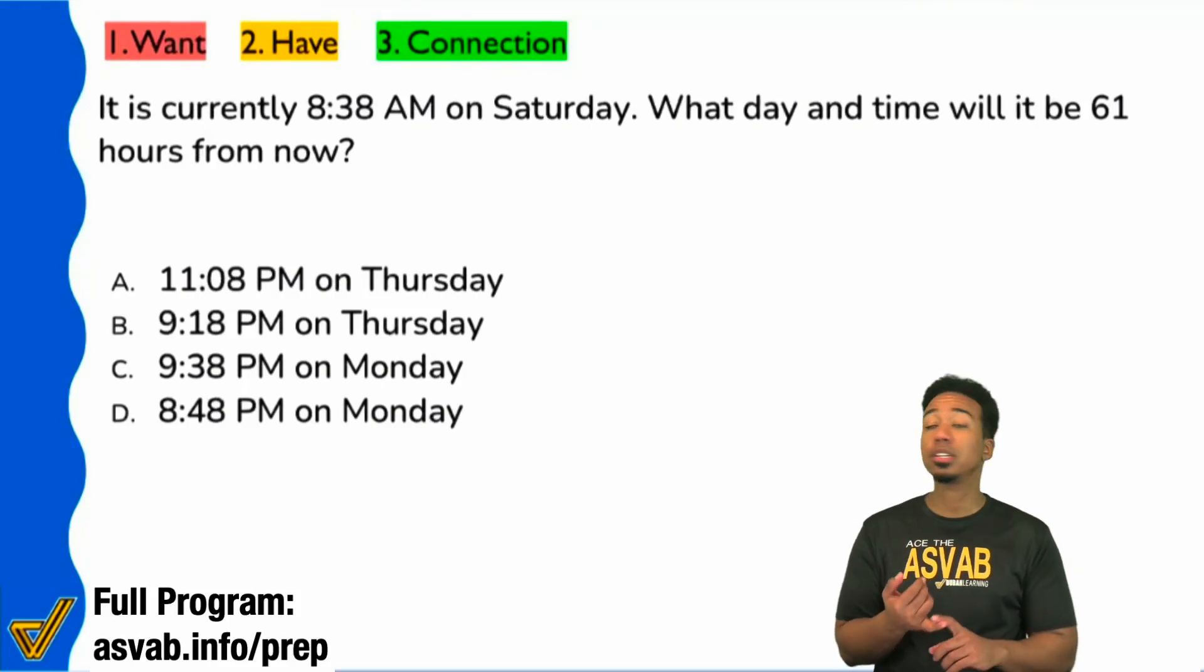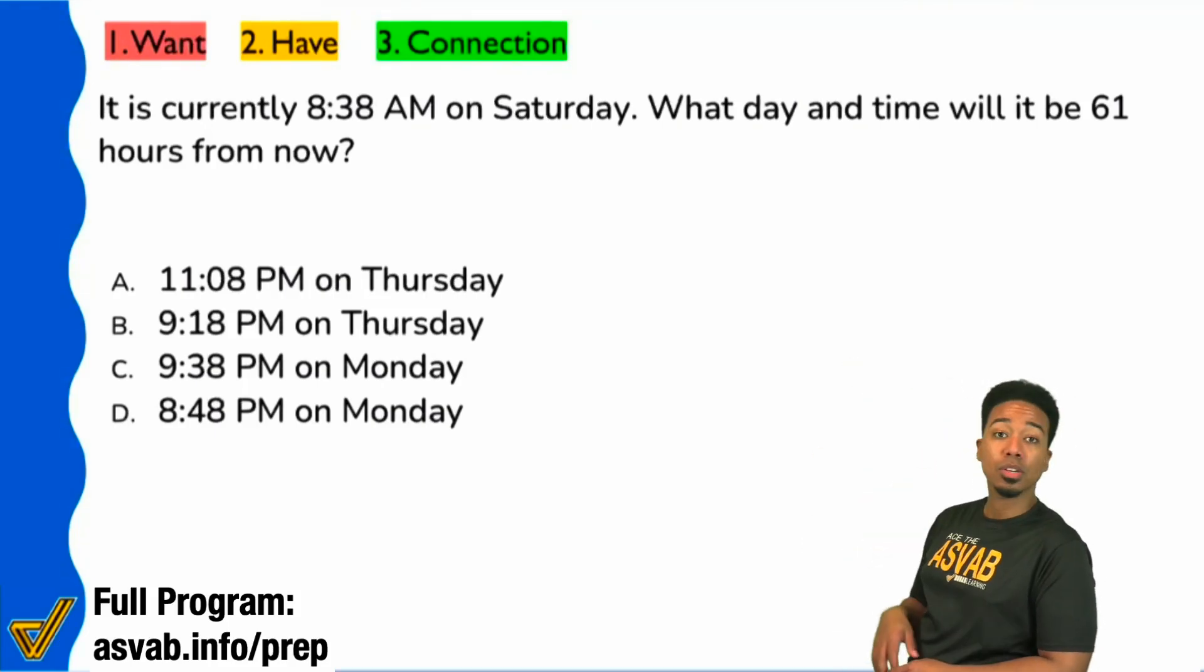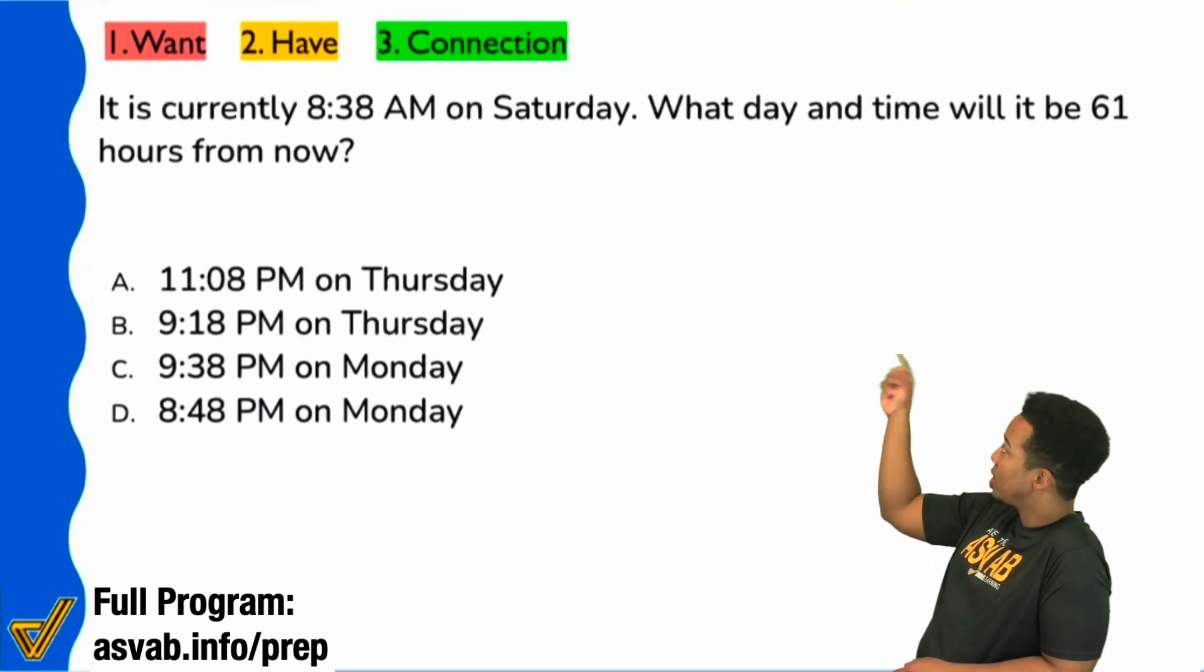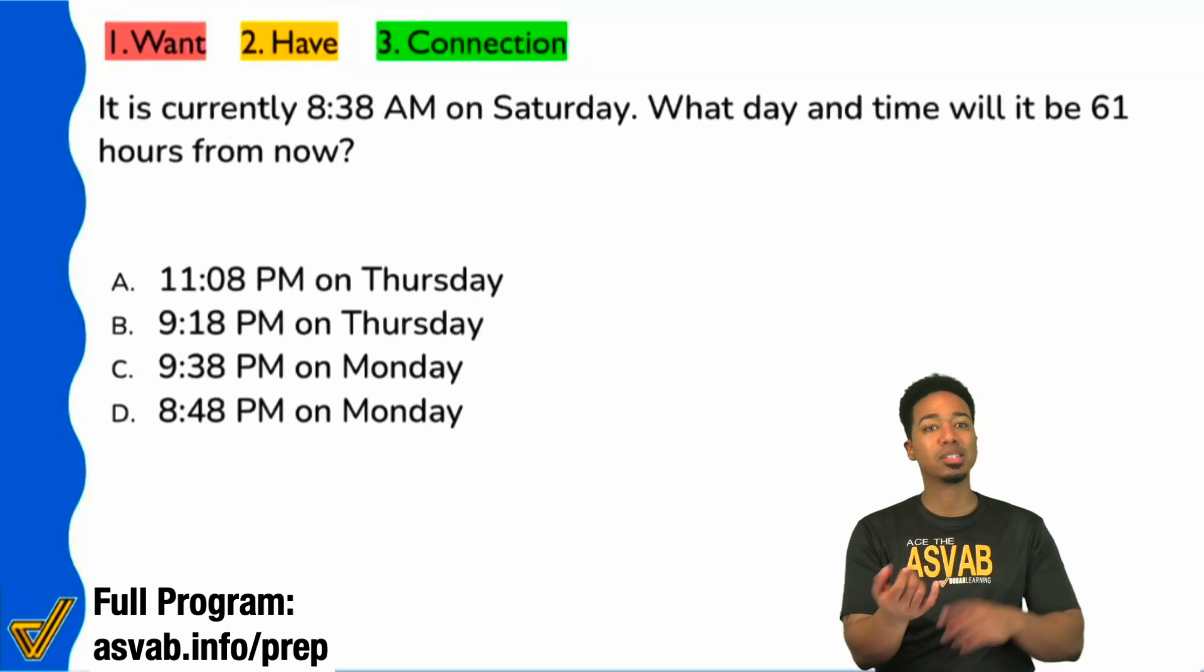Here's the process you're going to see at the top left: what do you want, what do you have, what's the connection - red, yellow, and green. This means step one, what you want, is the goal of the question.